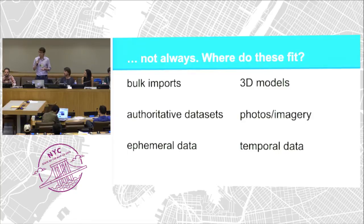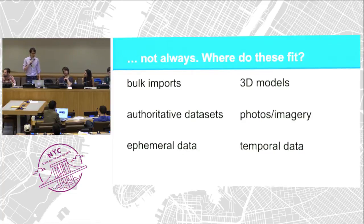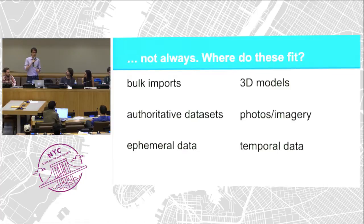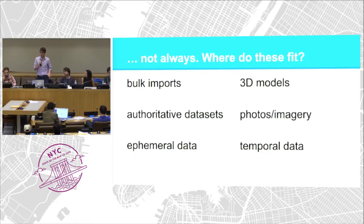There's also ephemeral data, like traffic or the use of infrastructure — things that are not base map, but are relevant to how that infrastructure is used. The OpenStreetMap data model is very flexible, but there are other types of objects it doesn't represent very well, like 3D models. Photographs, imagery, and temporal data are all other things we're interested in that don't fit exactly within the OpenStreetMap universe.